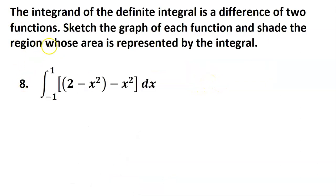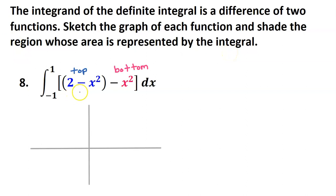For number 8, the integrand of the definite integral is a difference of two functions. Sketch the graph of each function and shade the region whose area is represented by the integral. To find the area between two curves, we integrate the top function minus the bottom function.